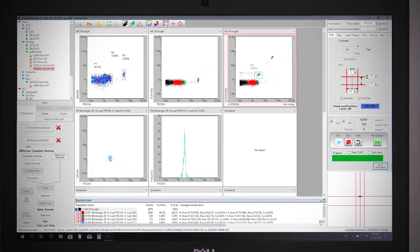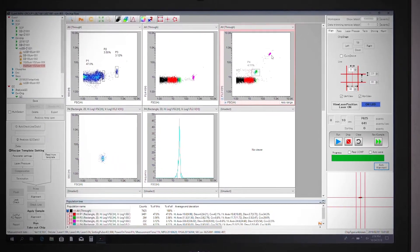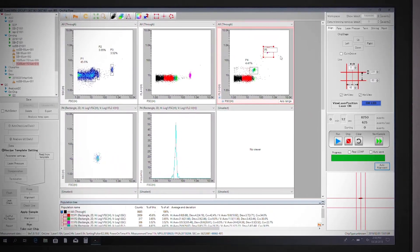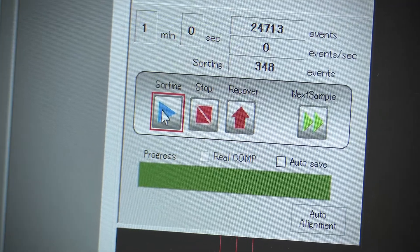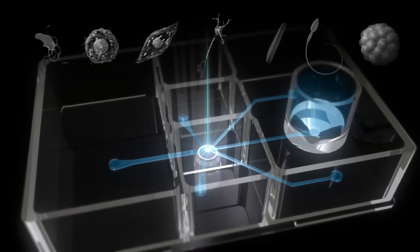Draw a sorting gate on the software, then press the start button to run the sample.